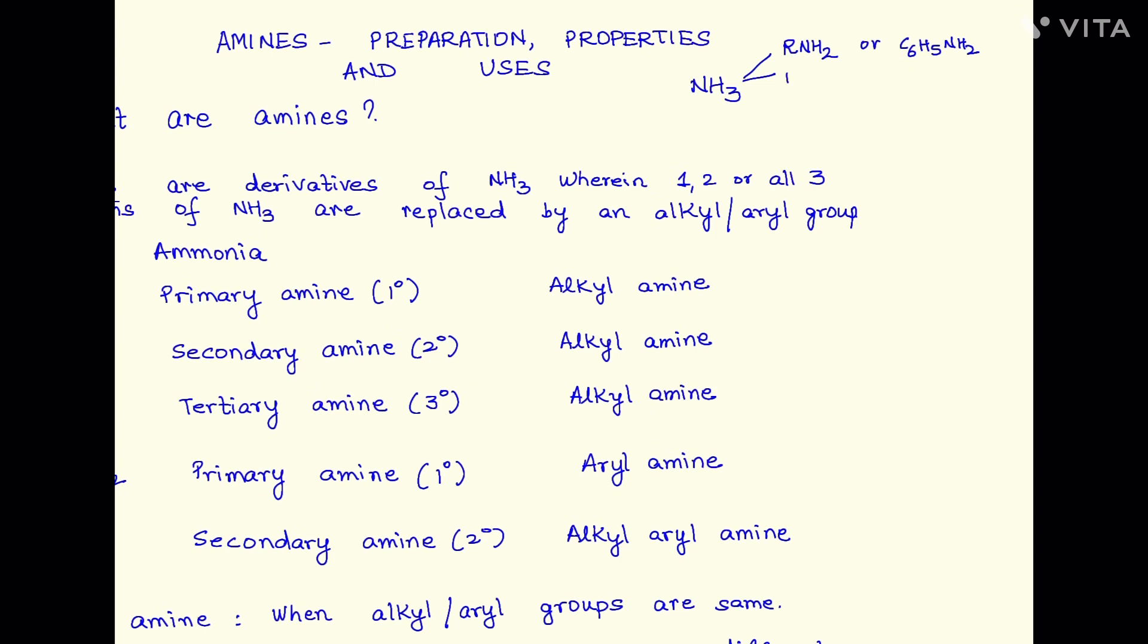If I replace two of the hydrogen atoms by an alkyl or aryl group, in that case we call it a secondary amine. If I replace all three hydrogen atoms by an alkyl group or an aryl group, we will have what we call as a tertiary amine.